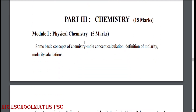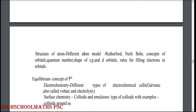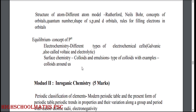Part 3, Chemistry, 15 marks. Module 1: Physical chemistry. Basic concepts of chemistry — mole concept, calculation, definition of molality, molality calculations. Structure of atoms: different atom models — Rutherford, Niels Bohr. Concepts of orbitals, quantum numbers, shapes of s, p and d orbitals. Rules for filling electrons in orbitals. Equilibrium. Electrochemistry: different types of electrochemical cells — Galvanic cells, also called Voltaic, and Electrolytic cells. Surface chemistry.